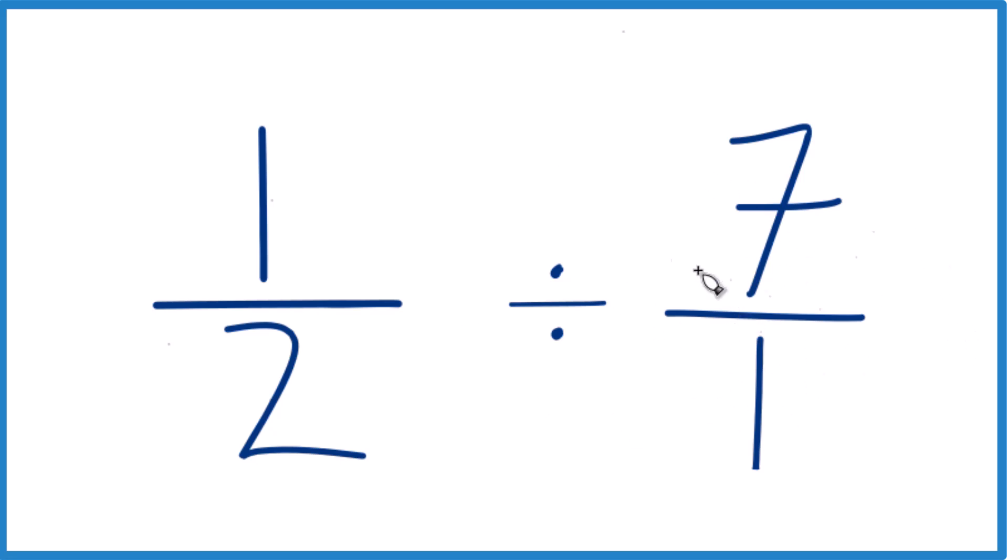So when we're dividing fractions, the way we can do this is we can take the reciprocal of 7 over 1. So we can move the 1 up and the 7 to the bottom. So we'd have 1 over 7.